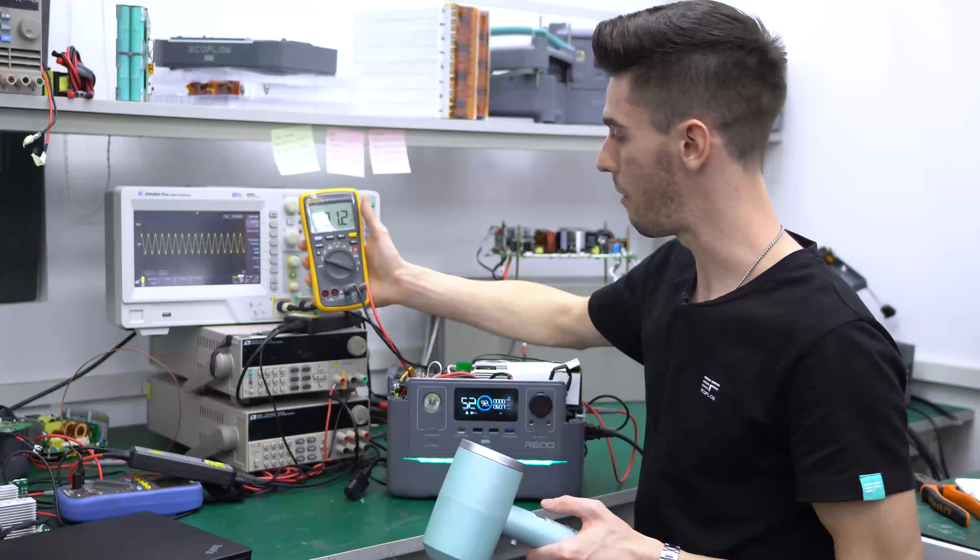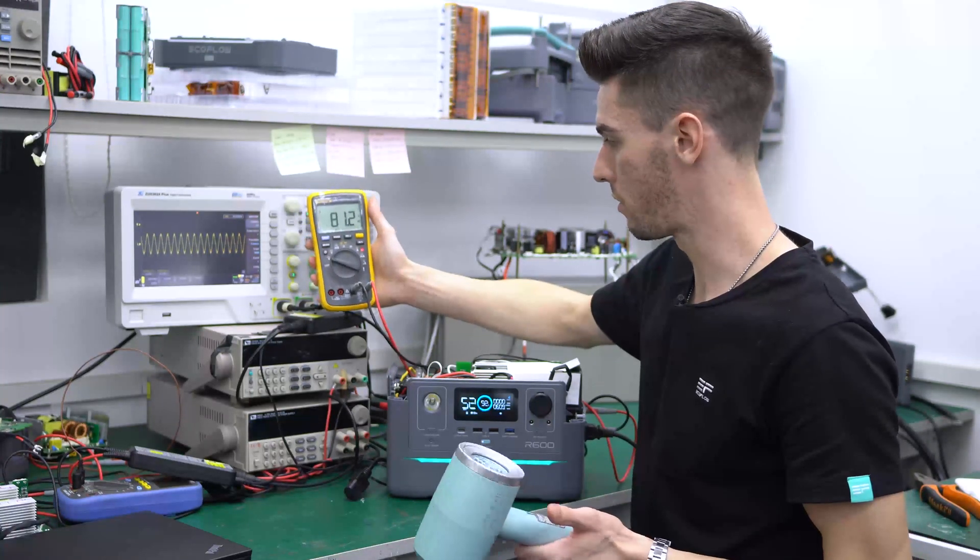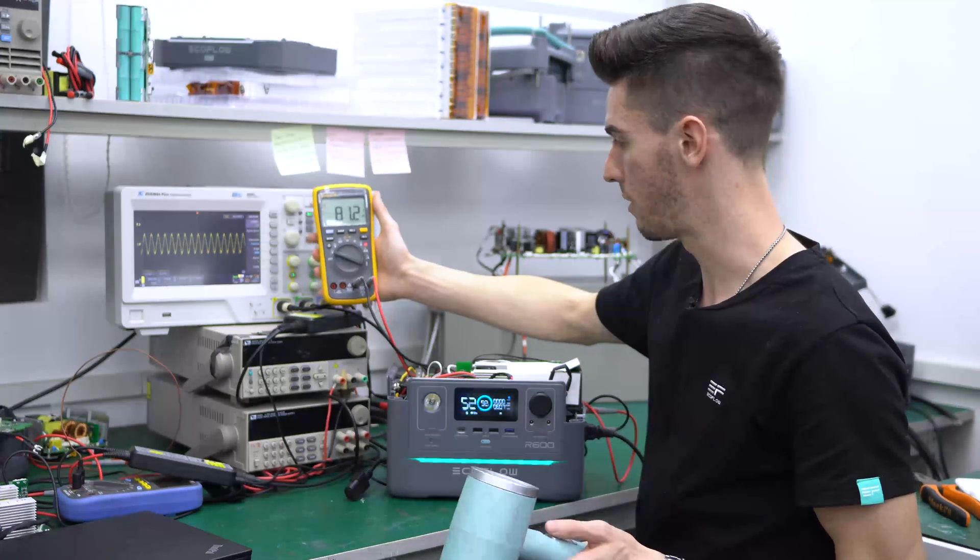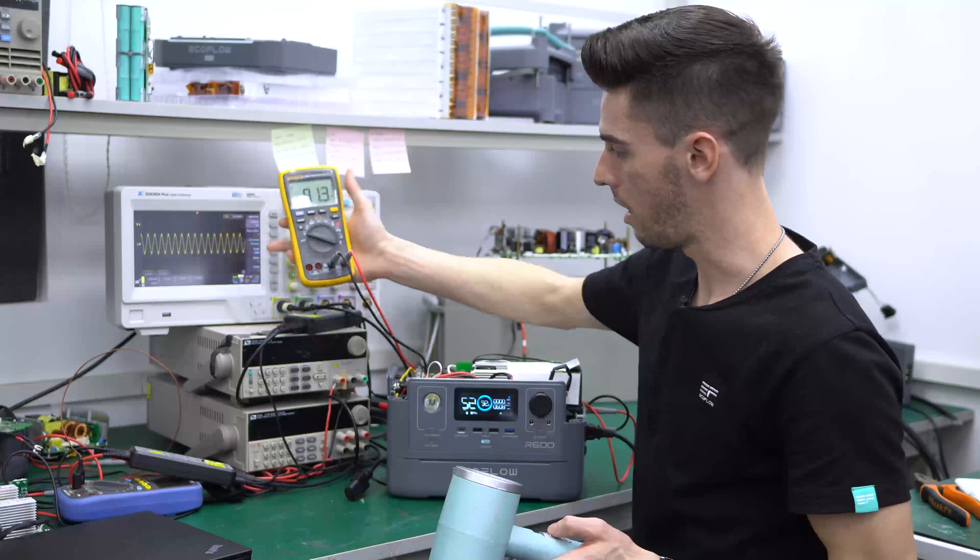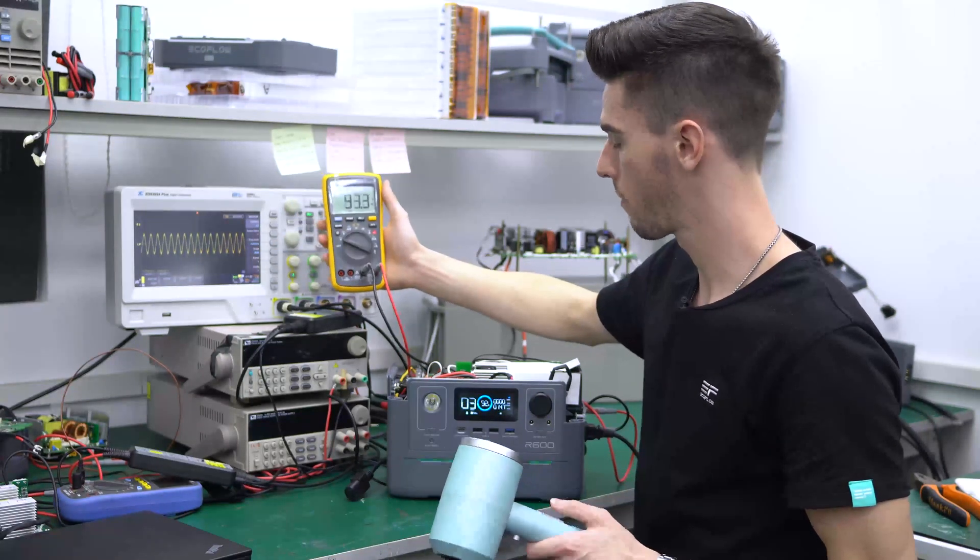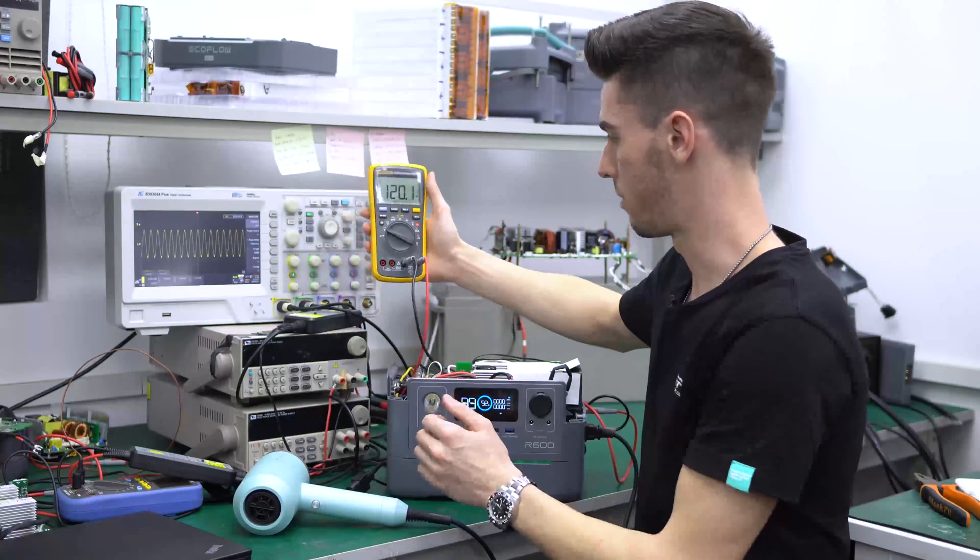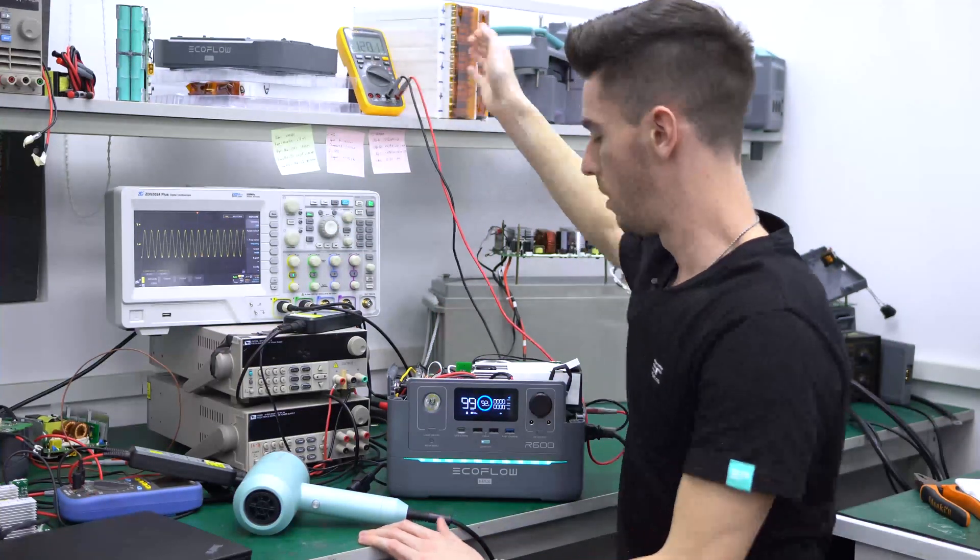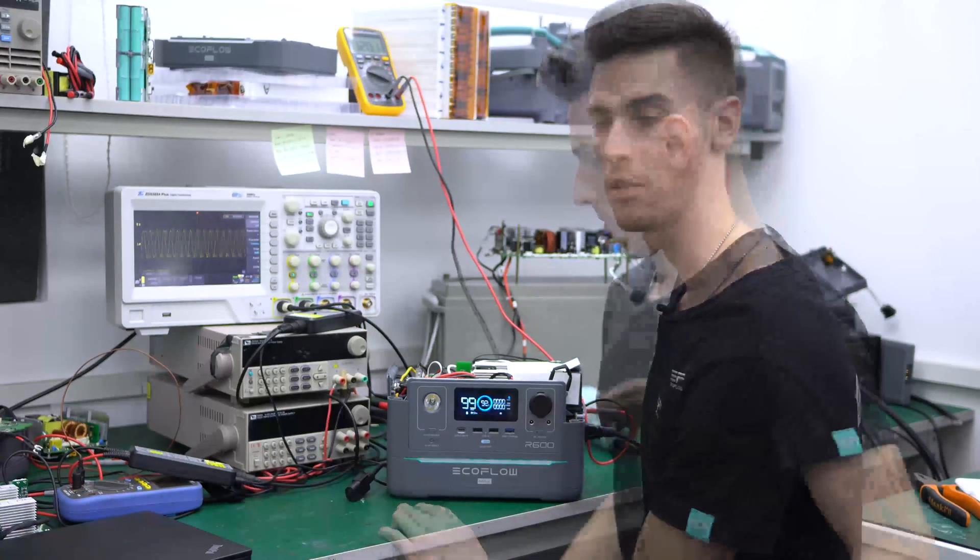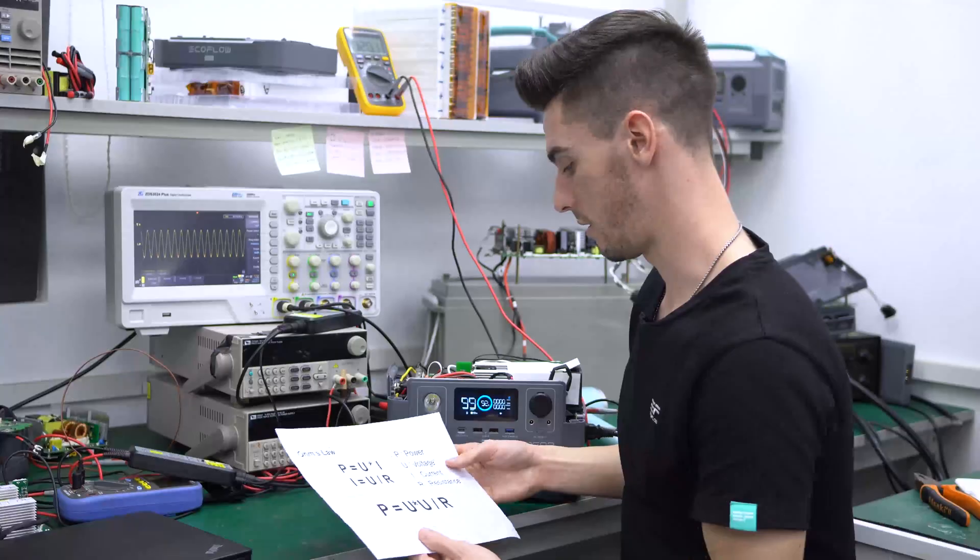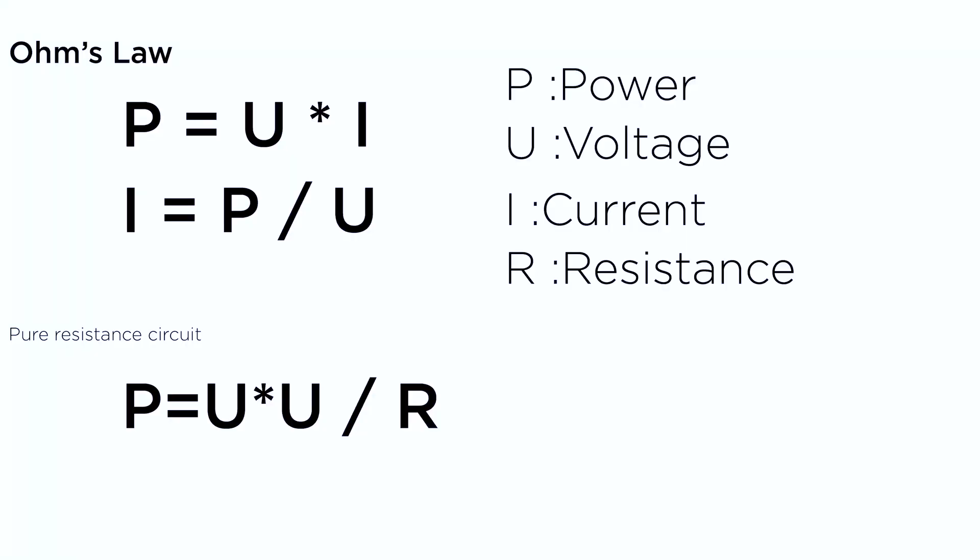So as you can see it dropped to about 80 volts, 81 volts. And the display on here shows an output of 600 watts. And on the oscilloscope you can see that it's remained a pure sine wave. And now it's returned to 120 volts. So this is how the X-Boost feature works. And the reason for this is it's based off of Ohm's law. So this equation is very important for the function of this feature.